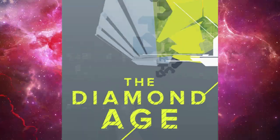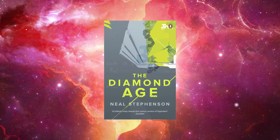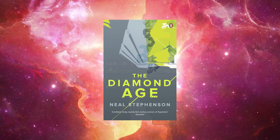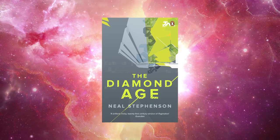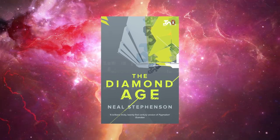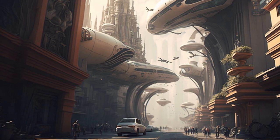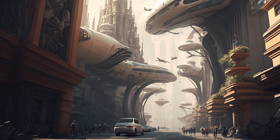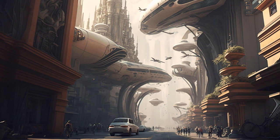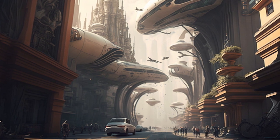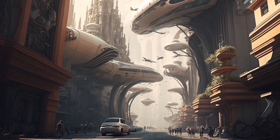An example of a technocracy in sci-fi literature can be found in the novel The Diamond Age by Neal Stephenson. The story takes place in a future where society is divided into different phyles, each with its own set of values and technologies. The main phyle is the Neo-Victorian phyle, which places a strong emphasis on education and technology. The society is run by a group of experts known as the Drummers, who use their knowledge and expertise to make decisions for the greater good — creating a stable and efficient society, but one that is heavily regulated and lacks individual freedom.